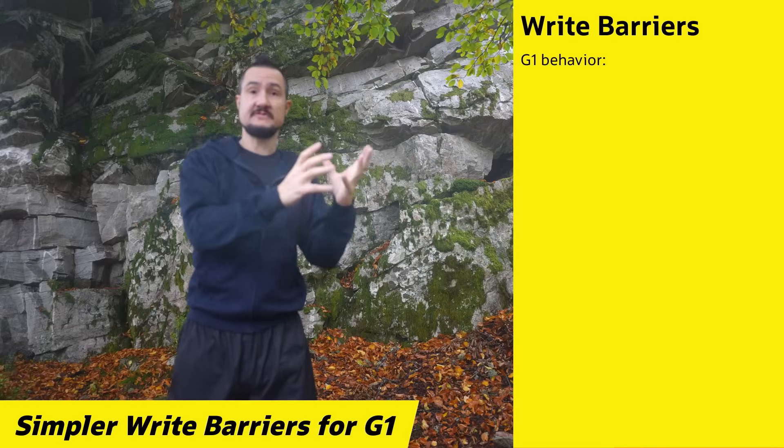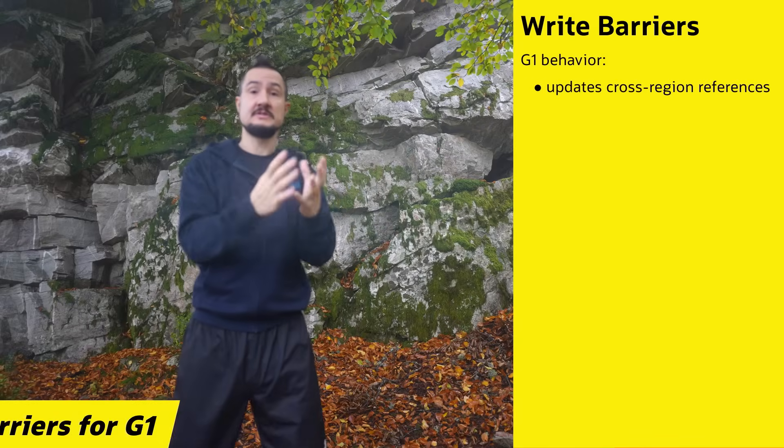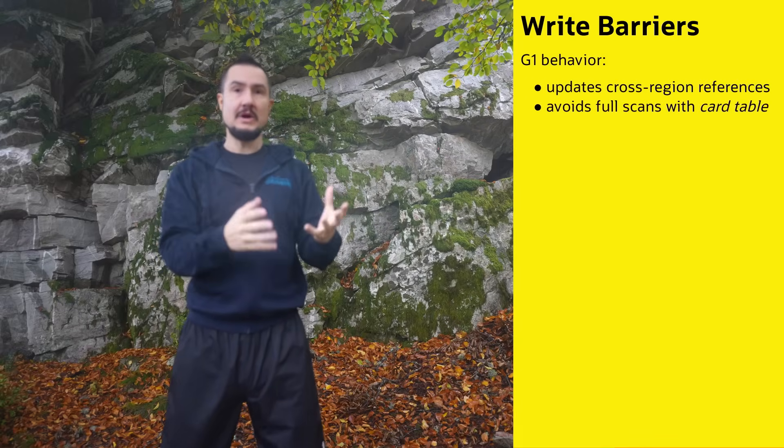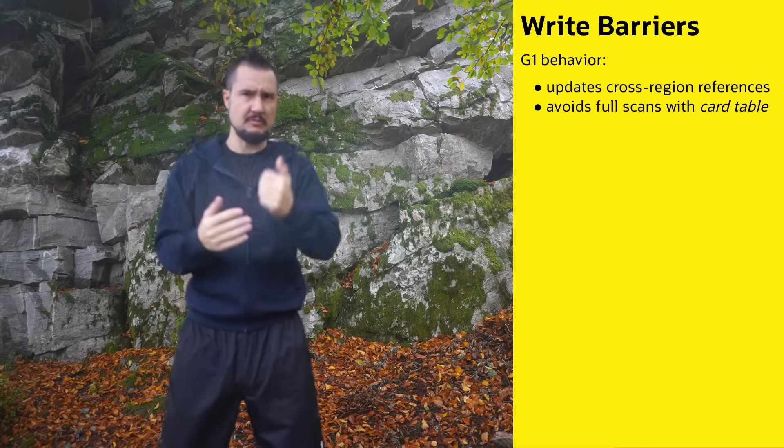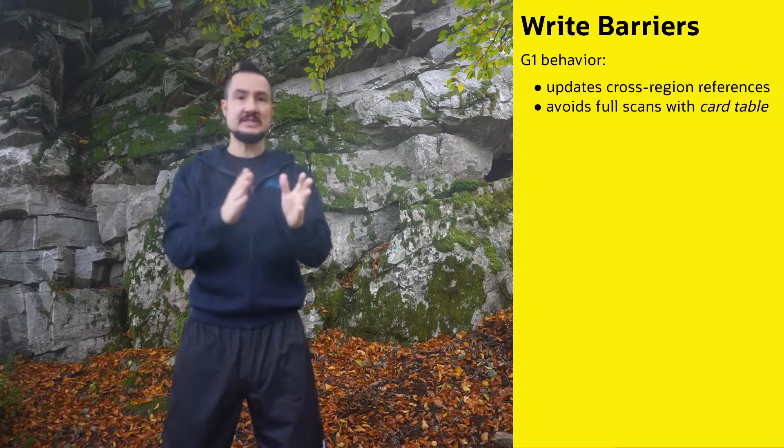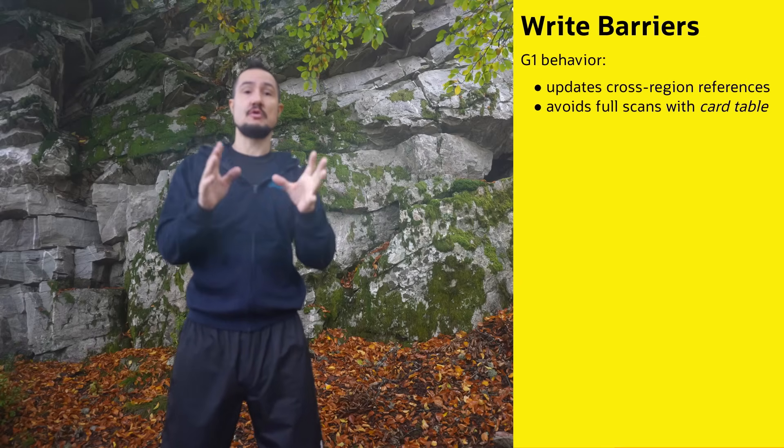G1 is a so-called regional garbage collector, meaning it divides the heap into regions and marks each as containing either young or old objects. That allows for a flexible ratio of the two generations that can align with each application's needs. The separation into regions also brings us to the first G1 improvement. When moving objects from one region to another, references to them must be updated, but G1 doesn't want to scan the whole heap for references to a moved object because that would take too long. So instead it tracks cross-region references in a so-called cart table.